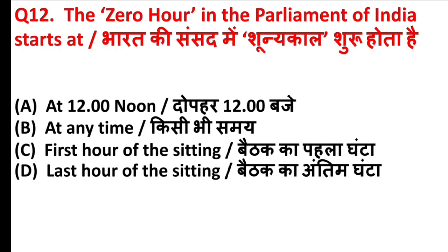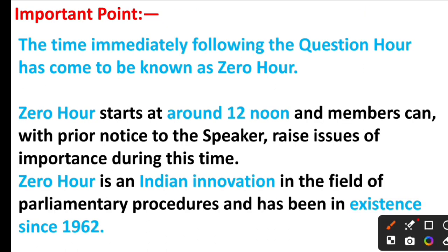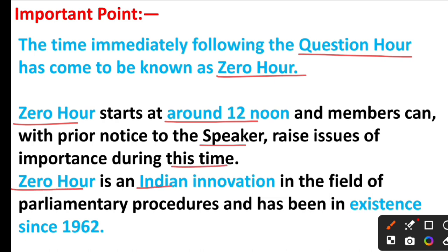The Zero Hour in the Parliament of India starts at? The answer is Option A, 12 noon. The time immediately following the Question Hour has come to be known as Zero Hour. Zero Hour starts at around 12 noon, and members can, with prior notice to the Speaker, raise issues of importance during this time. Zero Hour is an Indian innovation in the field of parliamentary procedures and has been in existence since 1962.